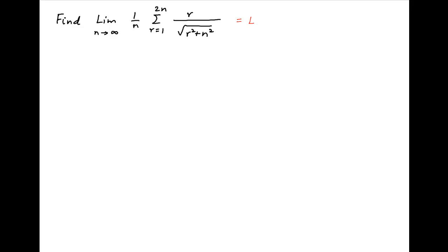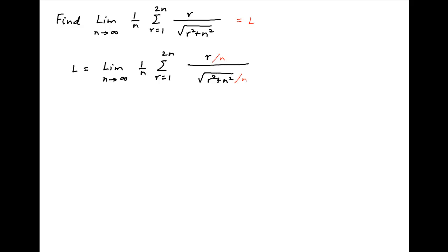Let's denote the given limit by L. Dividing both the numerator and the denominator in the expression under the summation by n, the denominator can be written as square root of r squared upon n squared plus 1, which is equal to square root of 1 plus r upon n, whole square.